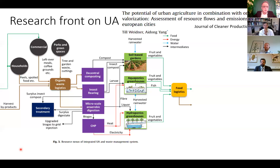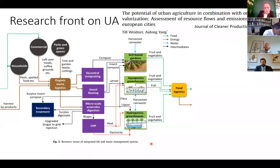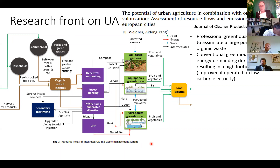Till and Aydong made a study of the potential of urban agriculture in combination with organic waste valorization, assessing resource flows and emissions from two European cities — Glasgow and Lyon. They looked at all existing possibilities of converting organic waste into new food products with existing urban agriculture and tried to balance the resources.